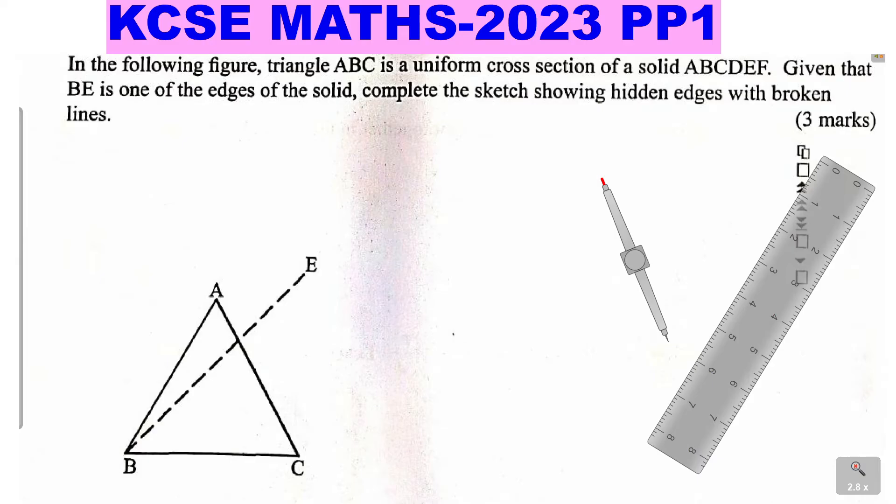Therefore, you need a ruler and a pair of compasses, as you can see. So this is how you're going to draw the remaining edges. Take the pair of compasses and first take the measurement BE. So we take measurement BE. That is the measurement BE.